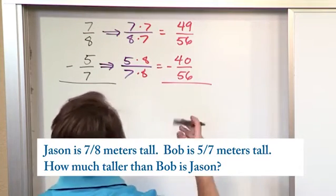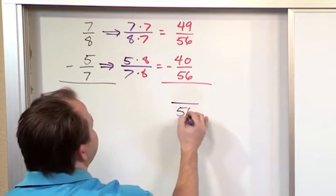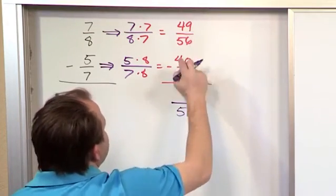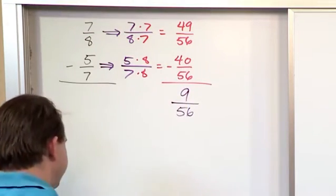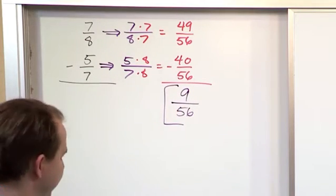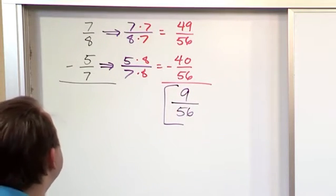So now that I have this common denominator, I just keep it in my answer. 56, and then I have 49 minus 40 is going to give me 9, and the answer is 9/56. It's a weird-looking fraction, but I can't really simplify that anymore, 9/56 of a meter.